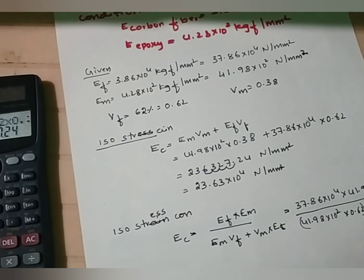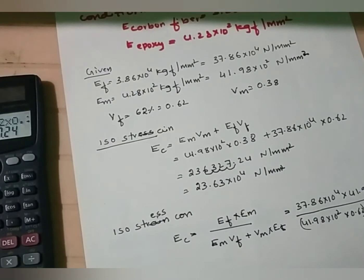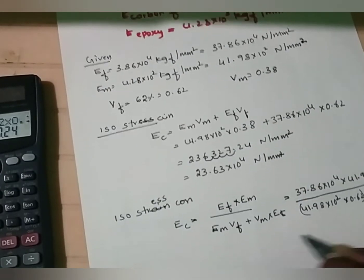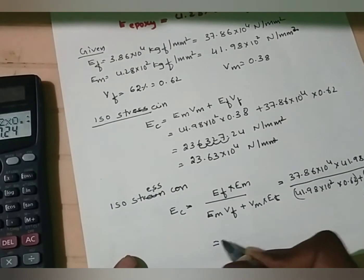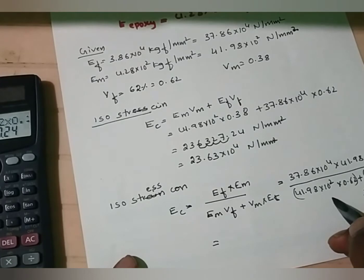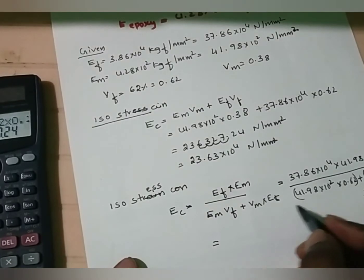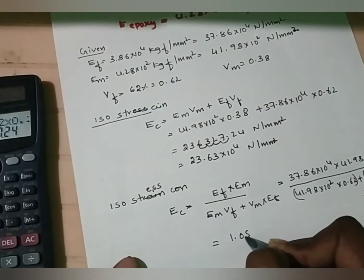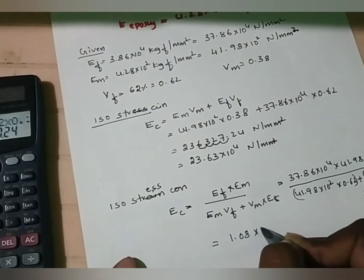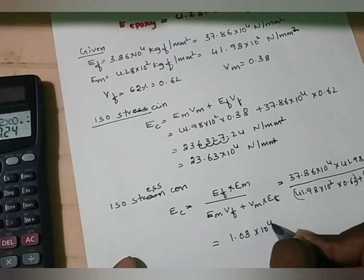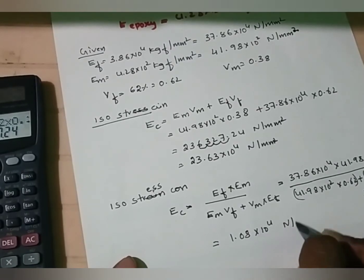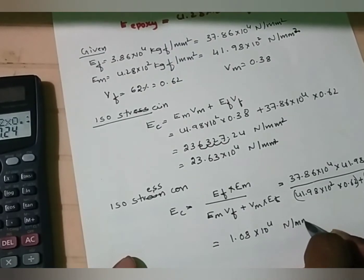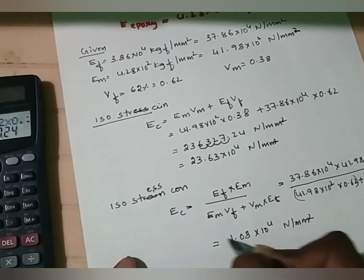Ef = 37.86 × 10⁴. If you simplify this using a calculator, you will get 1.08 × 10⁴ N/mm².